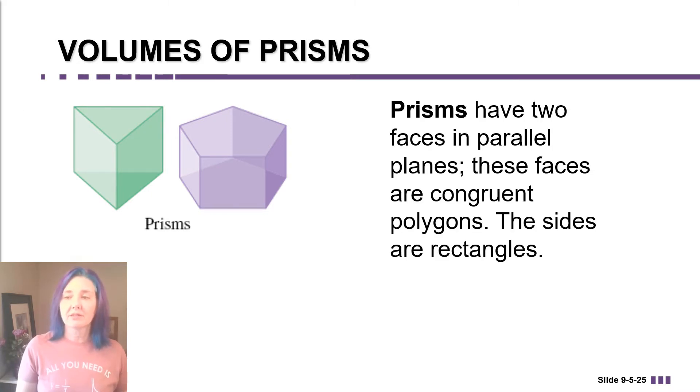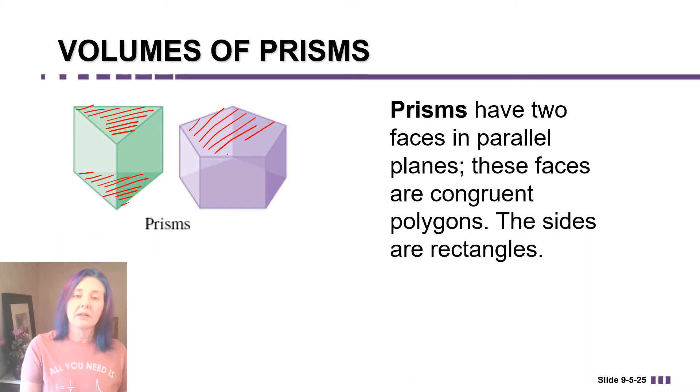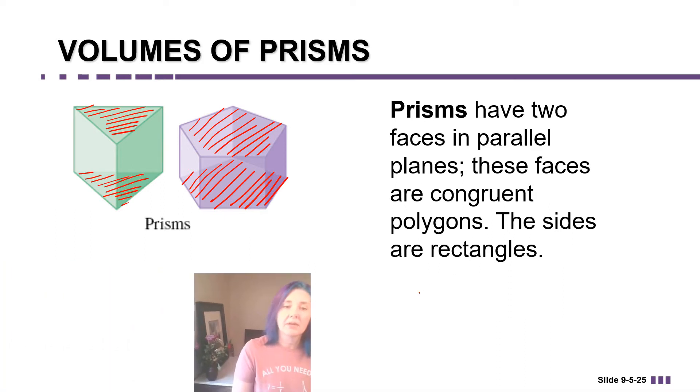Prisms have two faces in parallel planes, and these faces are congruent polygons. For example, in the prism on the left, we have a triangular face at the top and a congruent triangular face at the bottom. Similarly, in the prism on the right, we have a five-sided regular polygon, so that's called a pentagon. That pentagon shape is in a plane at the top and a parallel plane at the bottom of the prism.